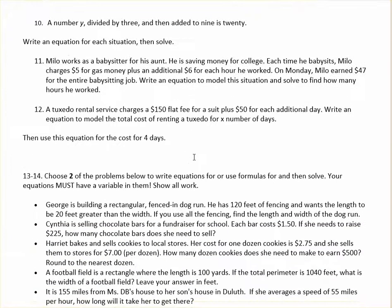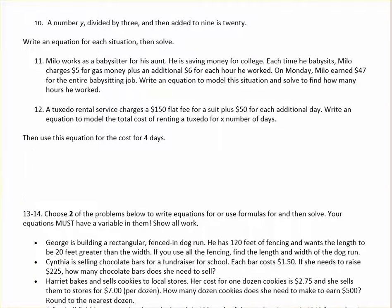All right, so let's look at a word problem to do. Let's look at number 12. Number 12 says that a tuxedo rental service charges $150 flat fee for a suit plus $50 for each additional day. So if I want to use D for day, I have to multiply 50 times that variable and add that to our flat fee in order to get our total cost.